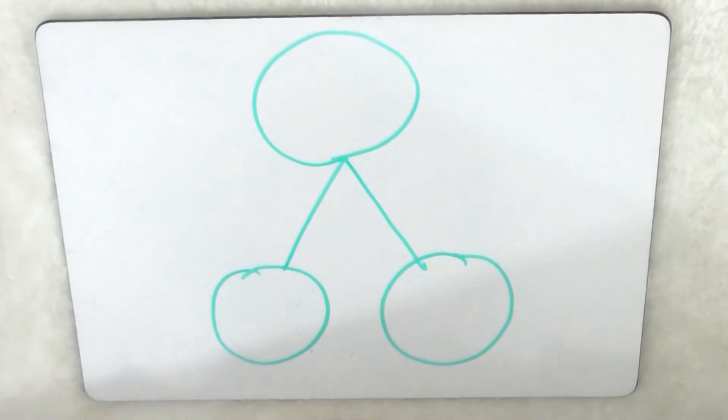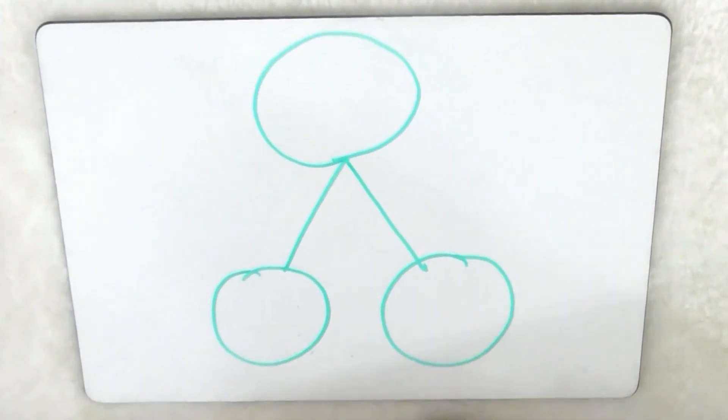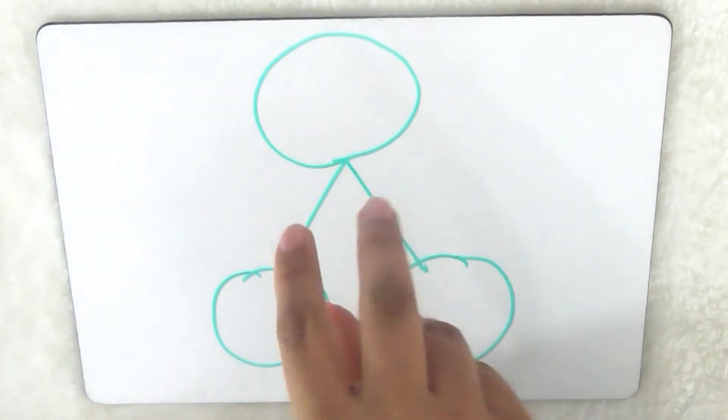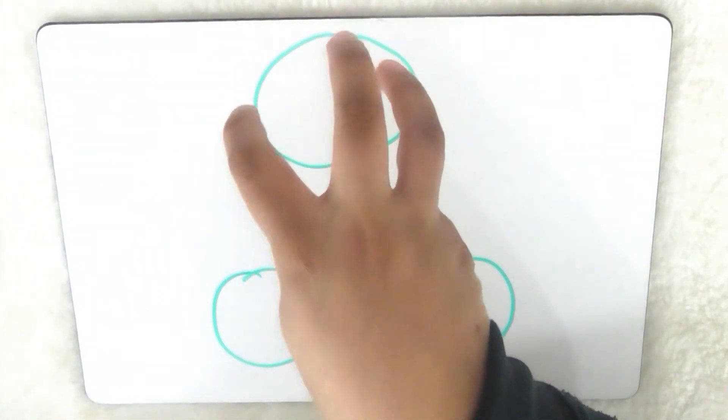Hi everyone, today I'm going to be showing you how to double a number using this method. So I have three circles, two at the bottom and there is a line joining to the top circle.